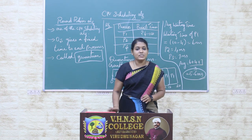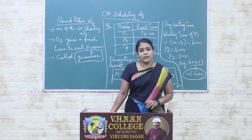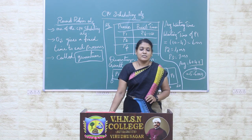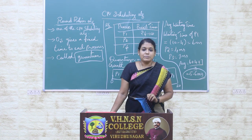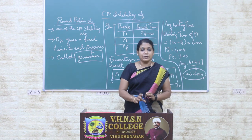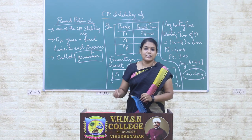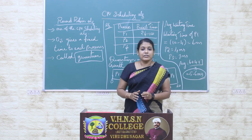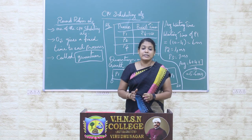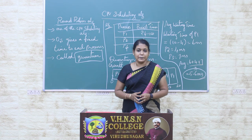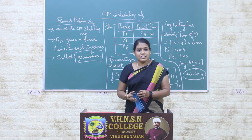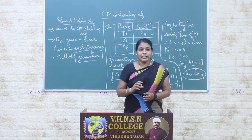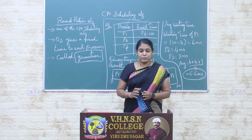So how does the Round Robin Scheduling Algorithm work? Basically, the operating system gives a fixed time period to each and every process in the process ready queue. That time period is called a quantum, which is measured in milliseconds. The process executes on the CPU for that given quantum period.